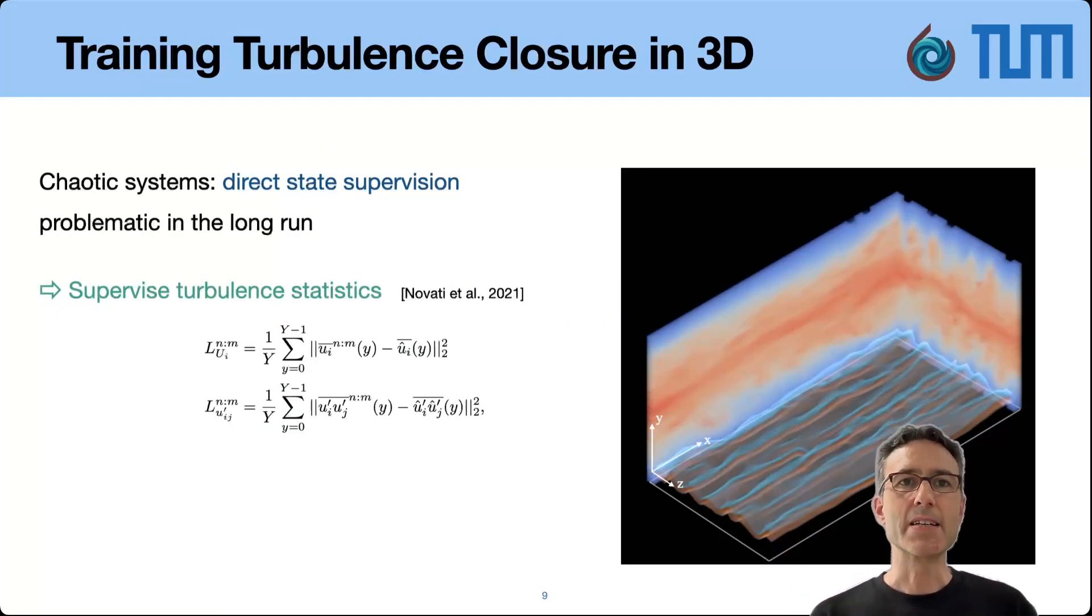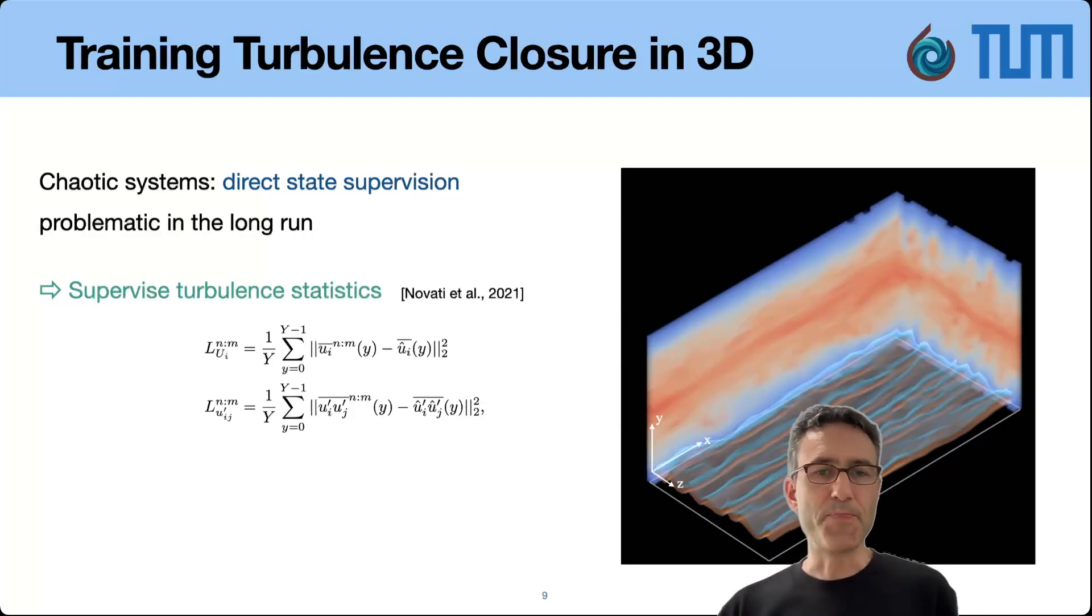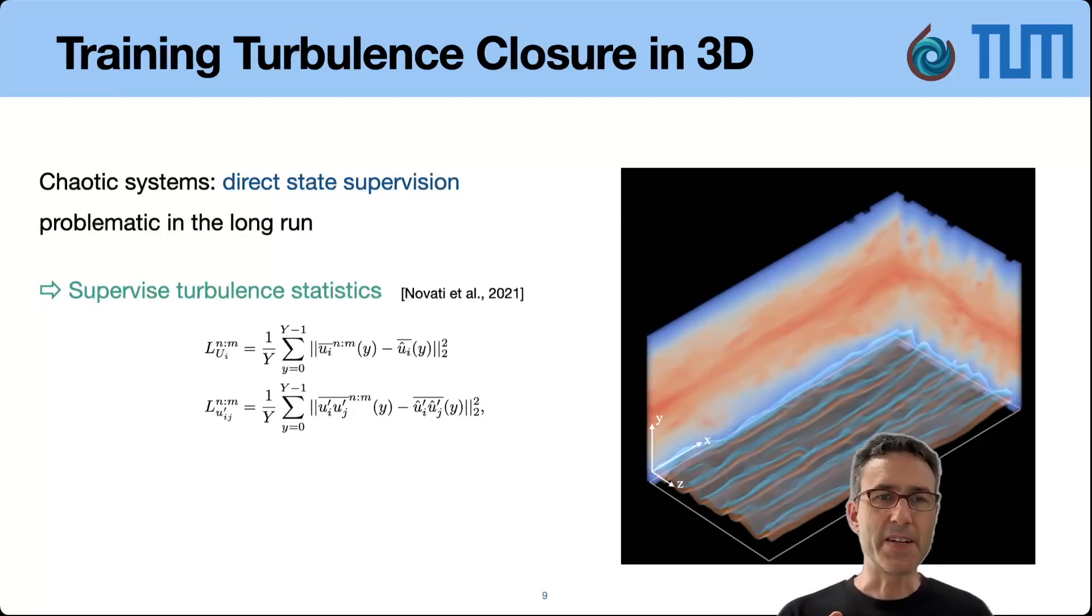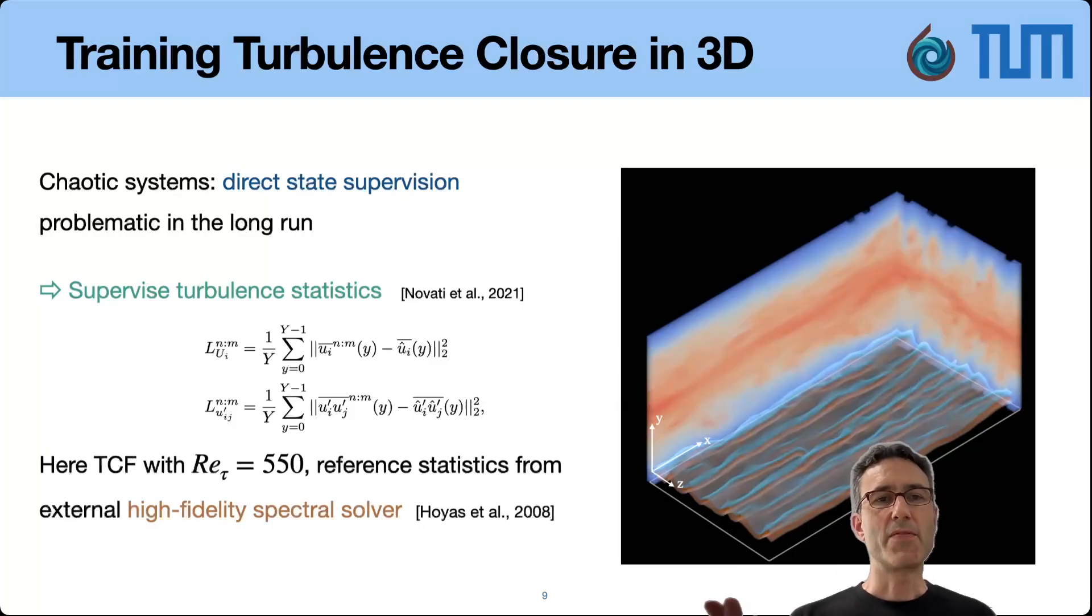Let's look at something more interesting, a 3D turbulent channel flow. So this is now really a turbulent case in terms of tau Reynolds number. This is a 550 scenario in line with previous work and also similar to previous work, the Novati paper, we're actually supervising just in terms of statistics. It's a turbulent case, if we run this long enough it will decorrelate. For characteristic turbulence it doesn't make sense to have pointwise direct supervision signals and hence what we're supervising here are the turbulence statistics.